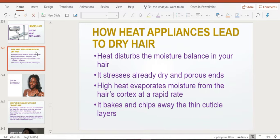Whenever you use high heat in your hair, it will evaporate moisture from your hair's cortex at a very rapid rate. Think about it this way: whenever you use really high heat appliances such as a flat iron, it will bake and chip away the thin cuticle layers on your hair shaft.